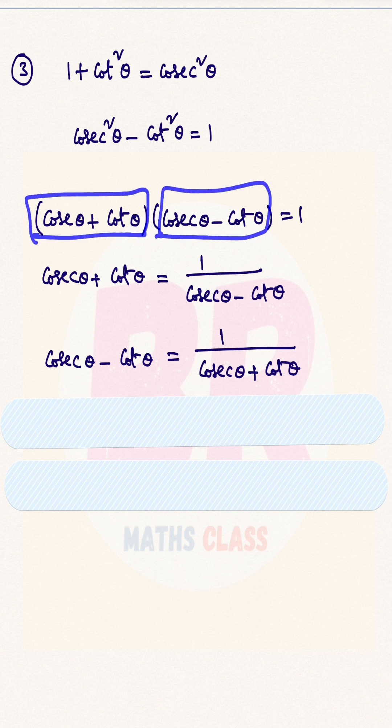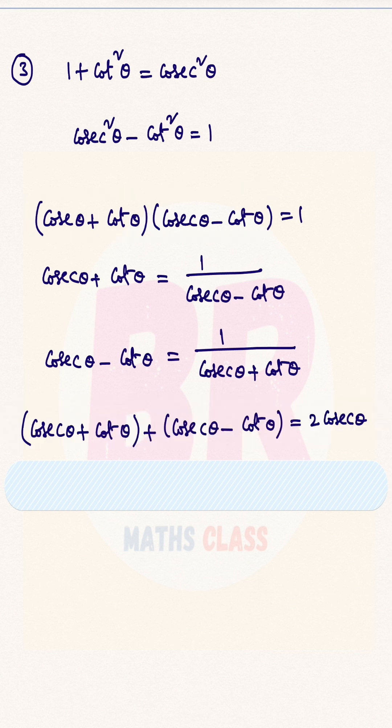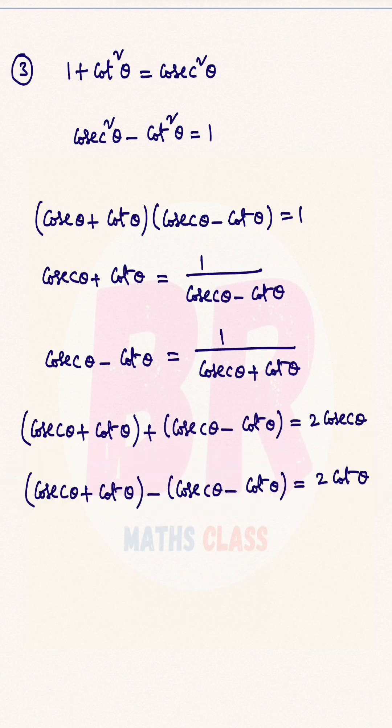If you add those two expressions, you will get 2cscθ. When you subtract them, you will get 2cotθ.